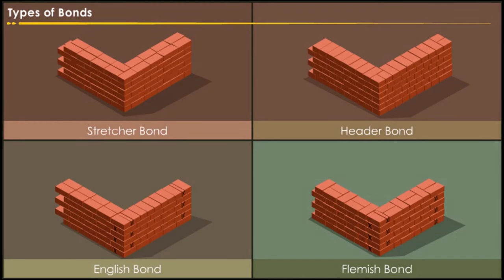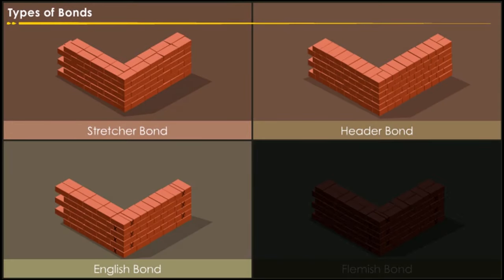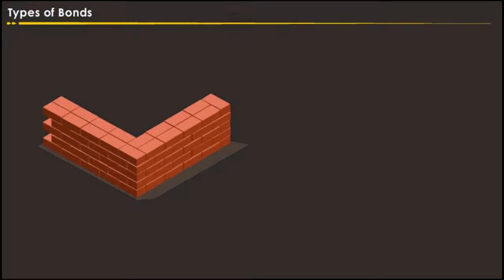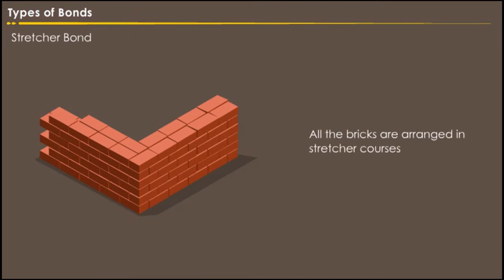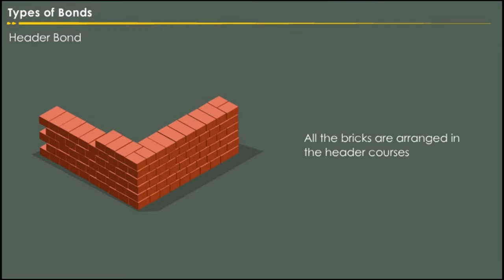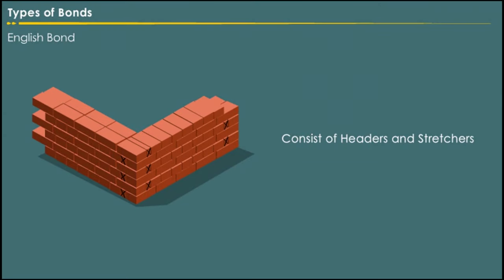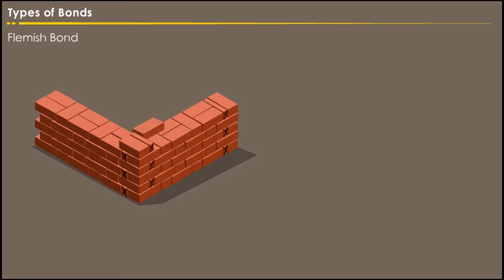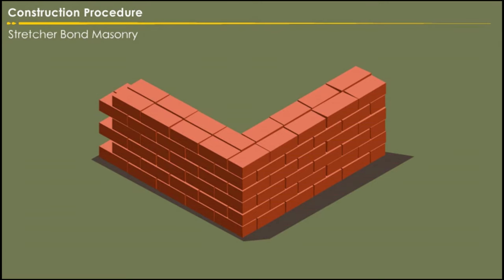The various types of bonds generally used in brick masonry are: stretcher bond, header bond, English bond, and Flemish bond. In stretcher bond masonry, all the bricks are arranged in stretcher courses. In header bond brick masonry, all the bricks are arranged in header courses. English bond courses consist of headers and stretchers. In Flemish bond, each course comprises of an alternate header and stretcher.